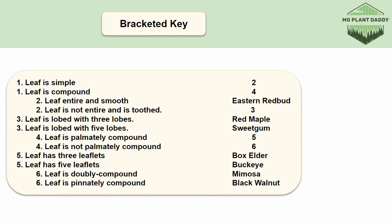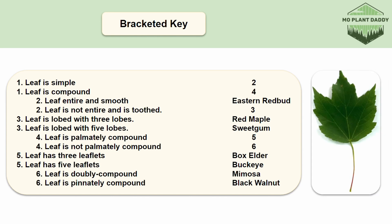Let's do a couple of examples here to clear up any confusion. Here's our first leaf. We start at couplet 1, which asks if our leaf is simple or compound. It's simple, meaning now we have to go to couplet 2. This asks if our leaf is entire and smooth or not entire and toothed. Our leaf is not entire and is toothed, so we will go to couplet 3. Here we are asked if our leaf has 3 or 5 lobes, which it has 3 lobes, so it must be red maple, otherwise known as Acer rubrum.